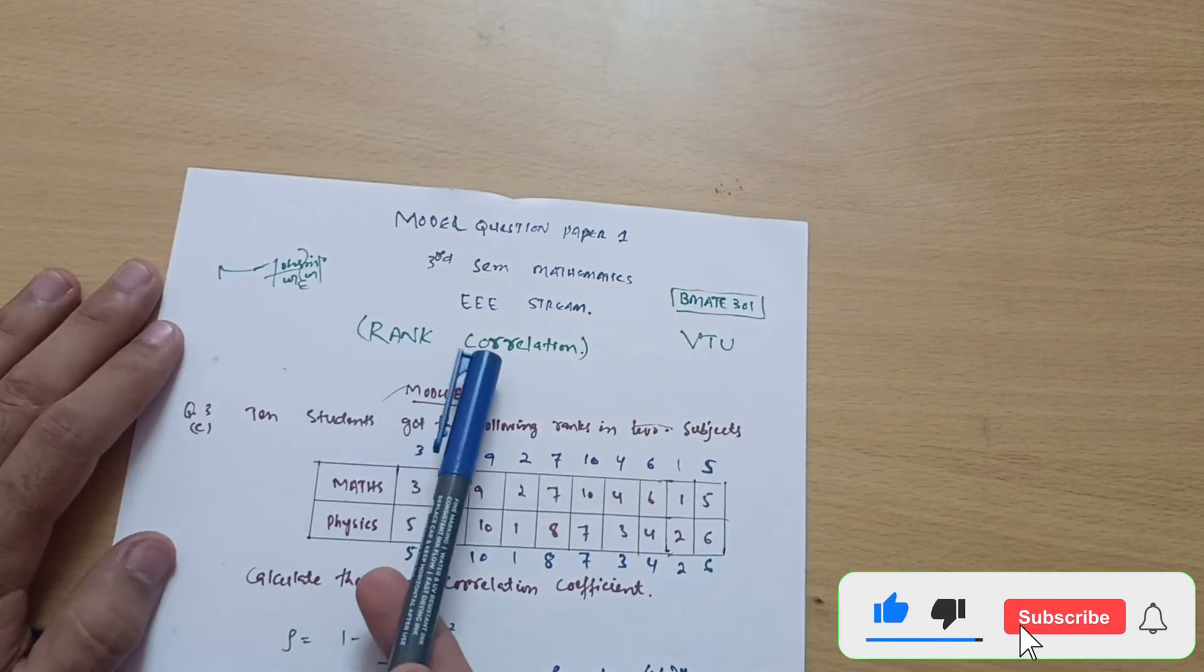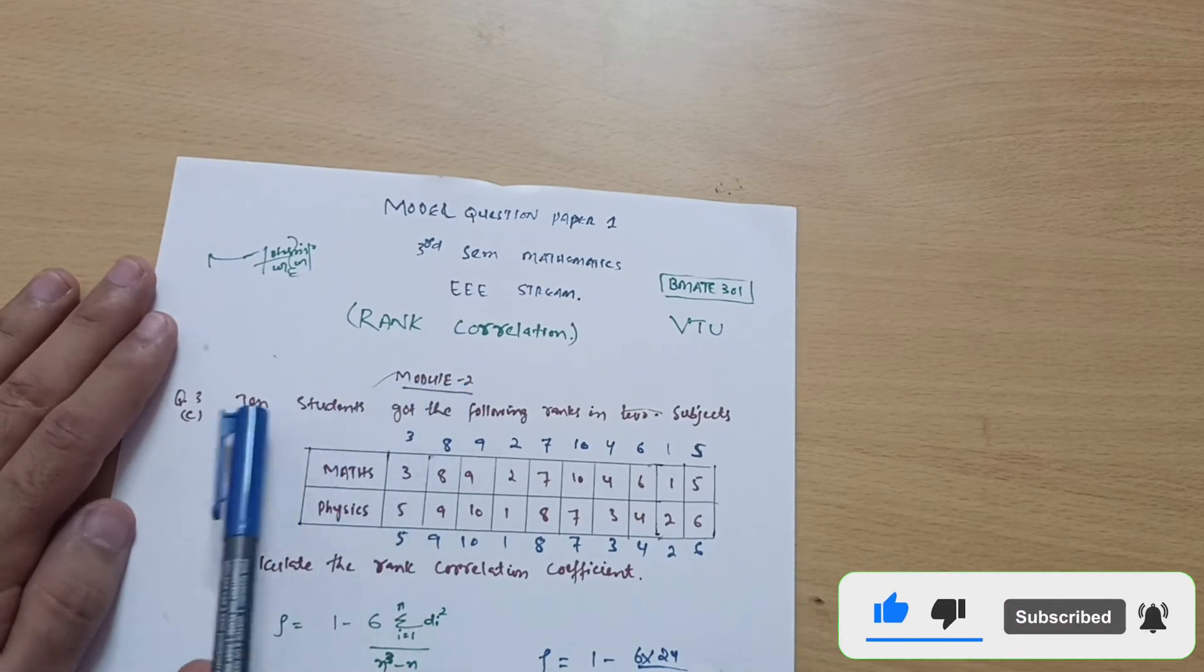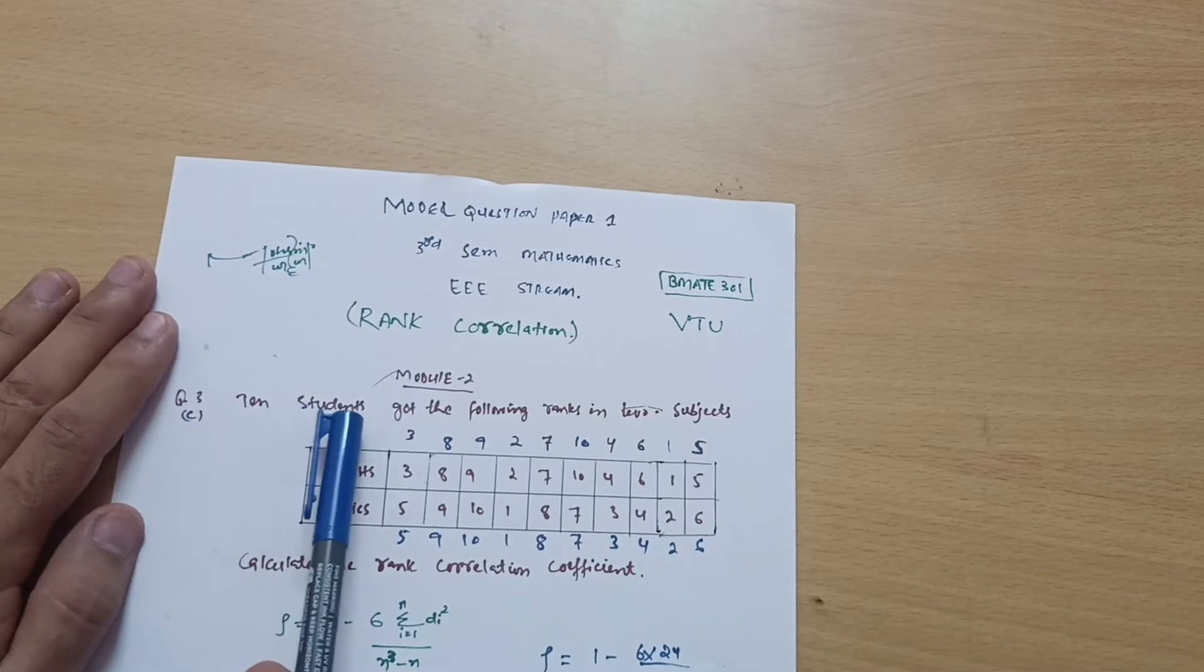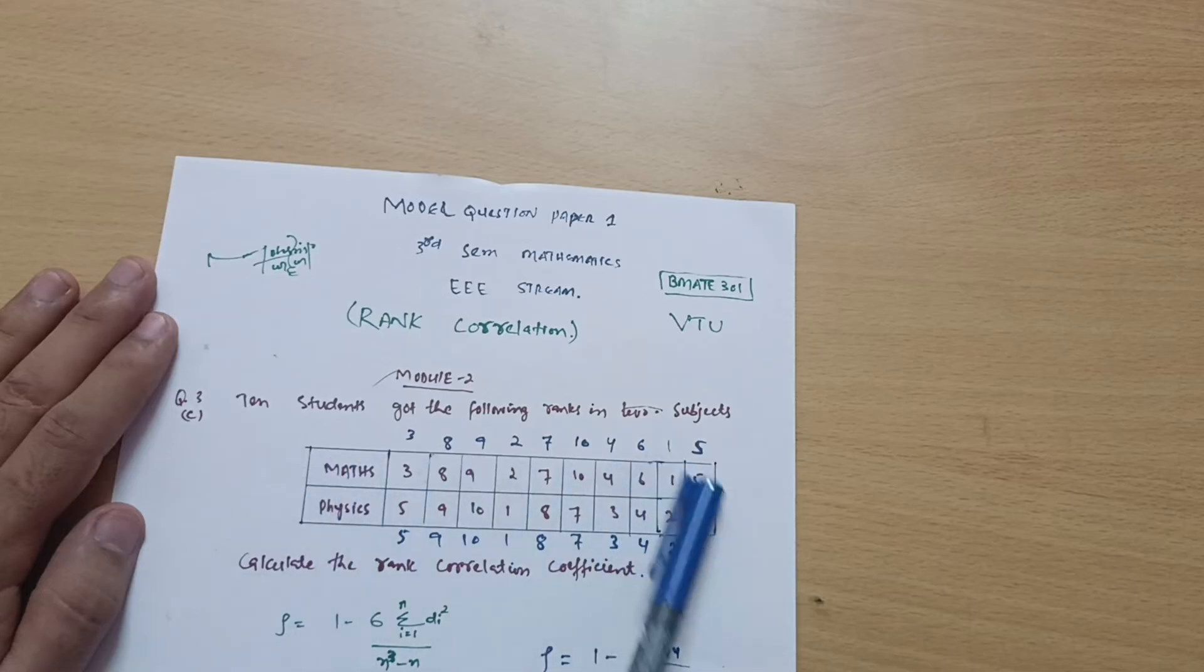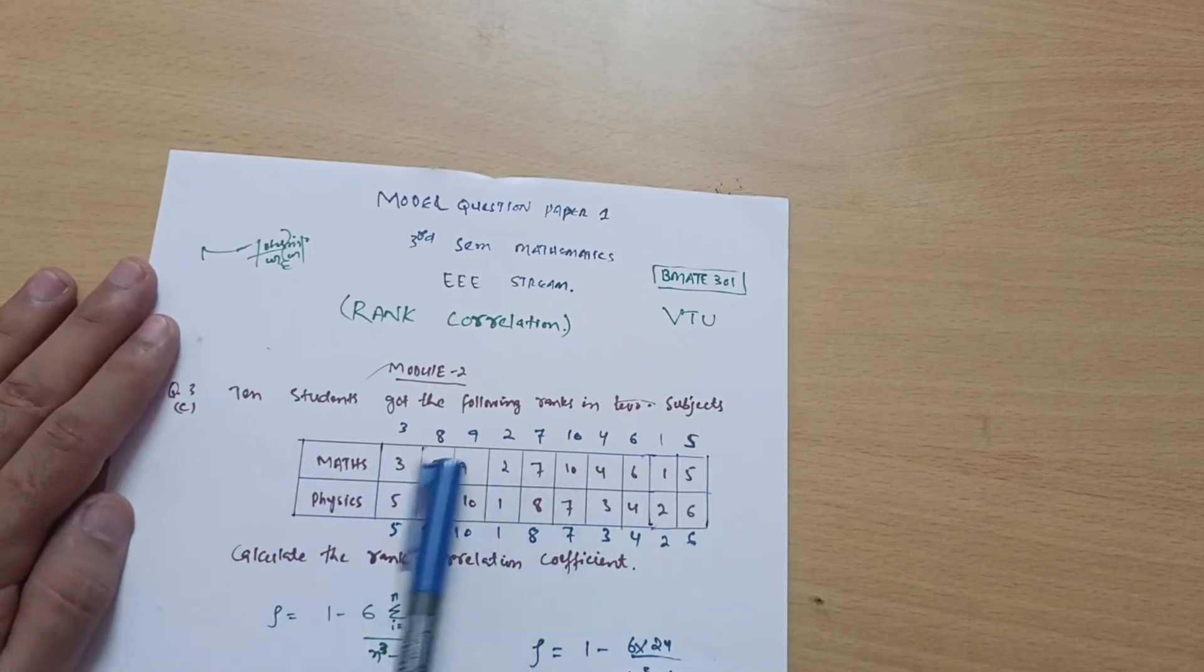Your question is from Module 2, Question Number 3C. Ten students got the following ranks in two subjects. The ranks are given for the two subjects in this table.